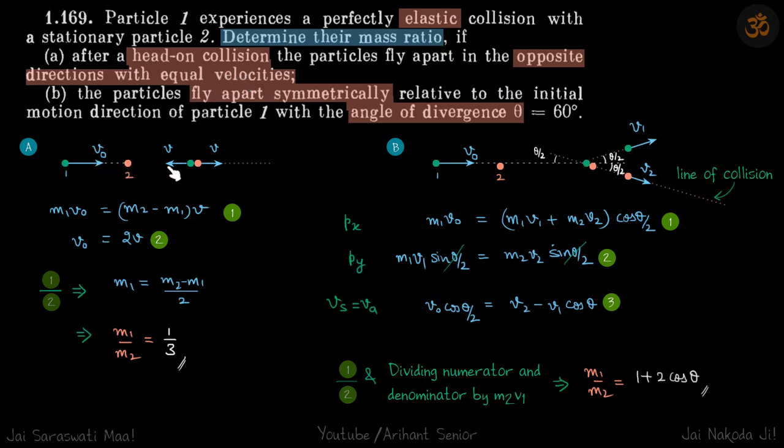In case 2, the particles fly apart symmetrically relative to the initial motion direction. Both split symmetrically relative to that direction, and the angle of divergence between both is θ. The total angle between them is θ, and because it is symmetric, the half angle becomes θ/2. We need to determine the mass ratio.